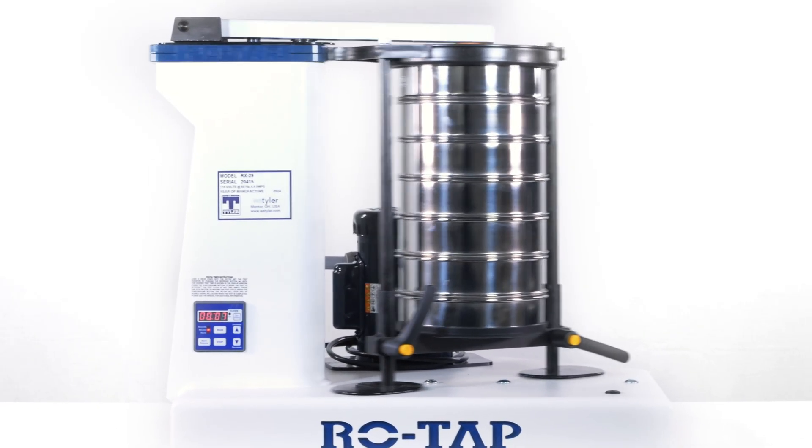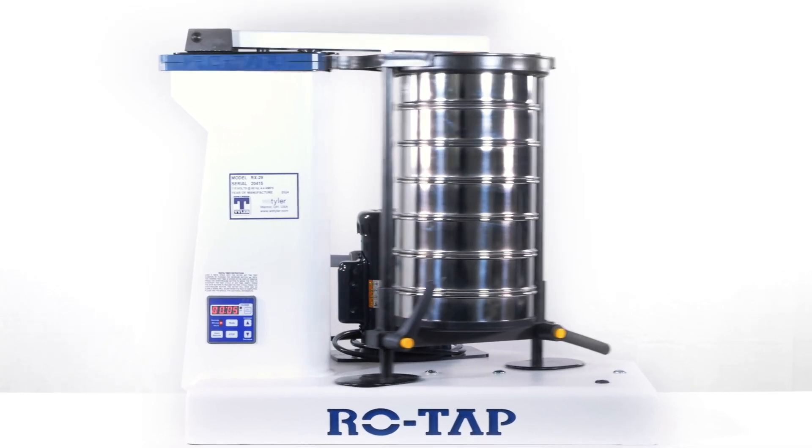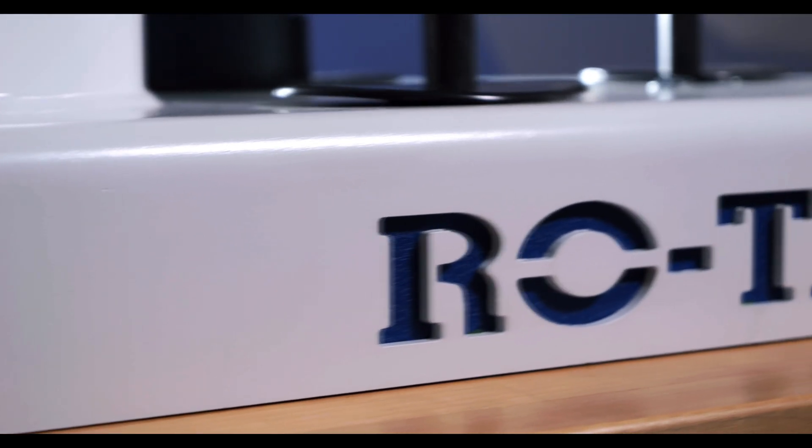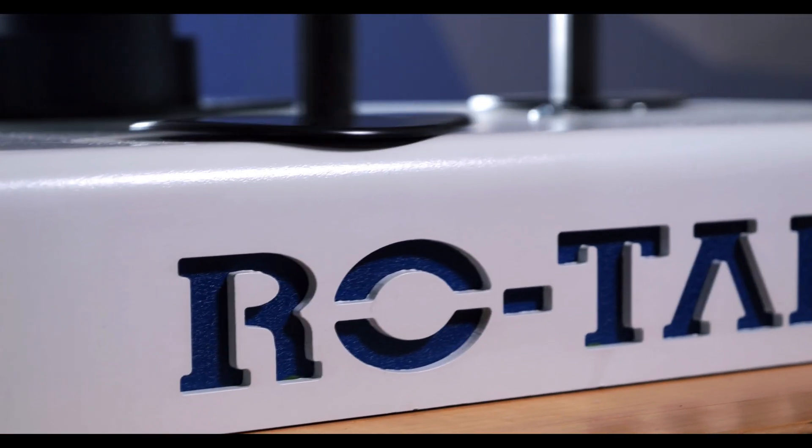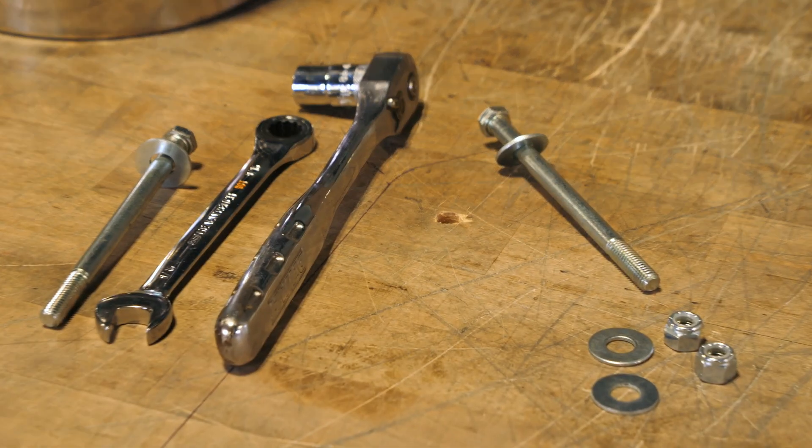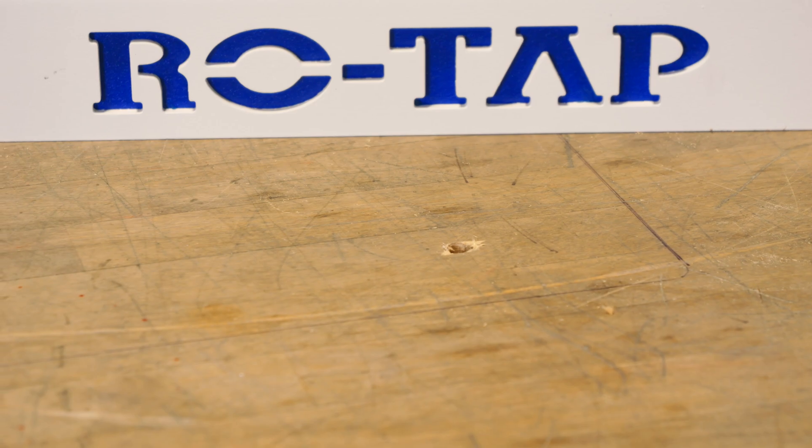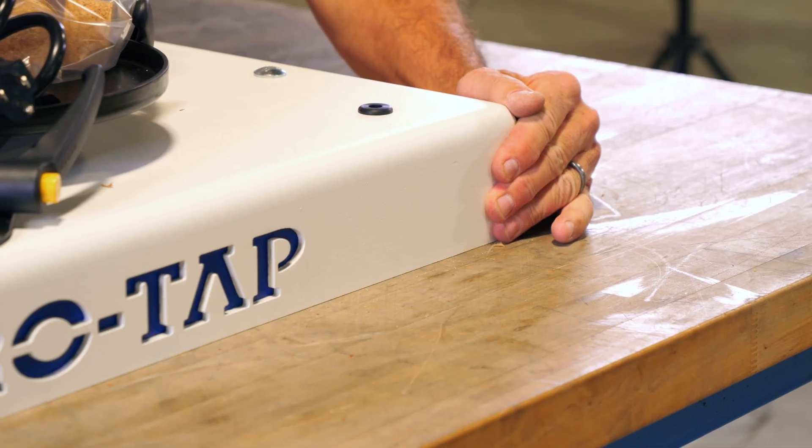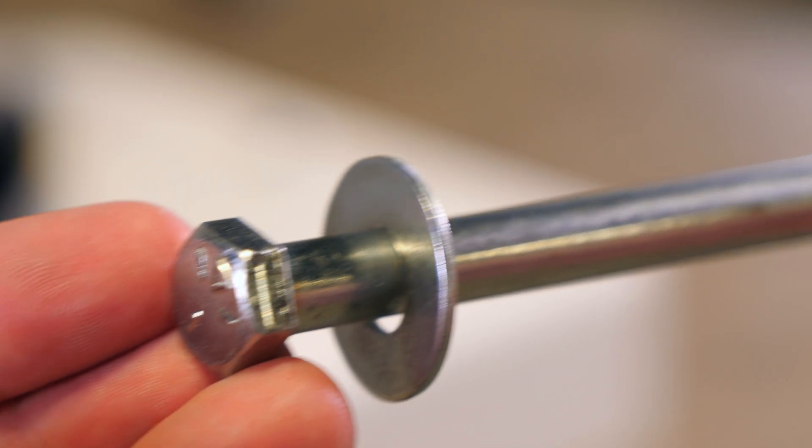Now it's incredibly important to bolt the RX29 to a table, otherwise it will absolutely 100% of the time shake its way off the table, destroying everything in its path, including itself. So as you can see, we've already drilled the holes necessary into the table. From there, line up the RX29 with the corresponding holes and proceed to use half inch bolts to secure it,